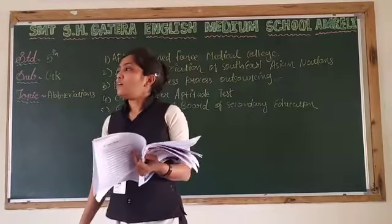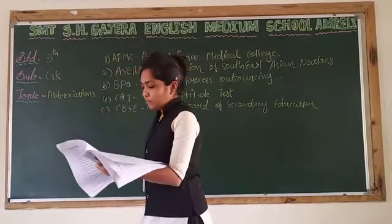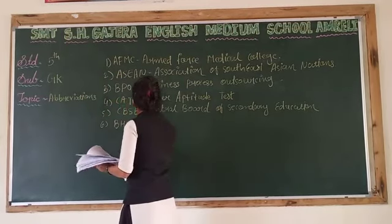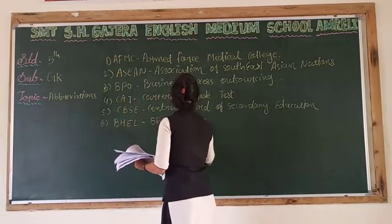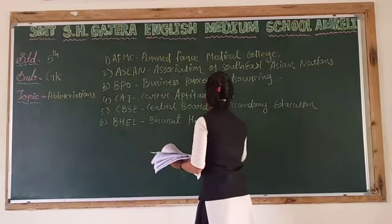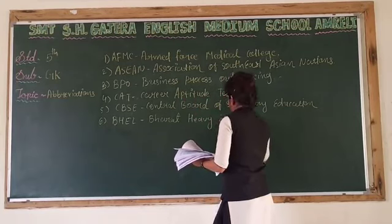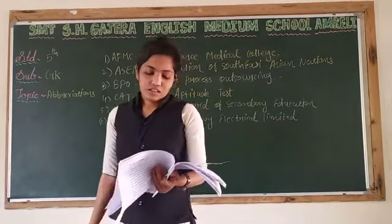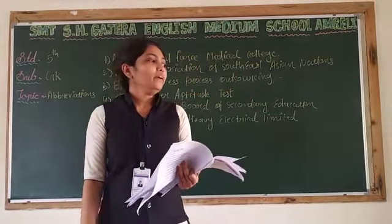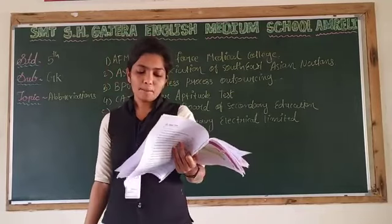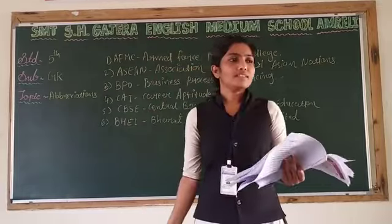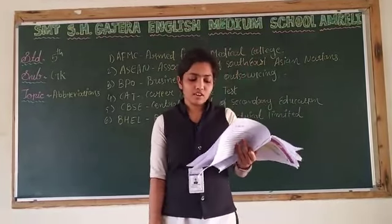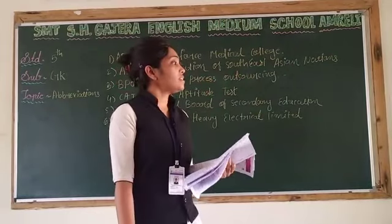Number six is BHEL. BHEL stands for Bharat Heavy Electricals Limited. BHEL is a very big company — it is the oldest and largest engineering and manufacturing company in India. It is a manufacturer of power plant equipment and was established in 1964.